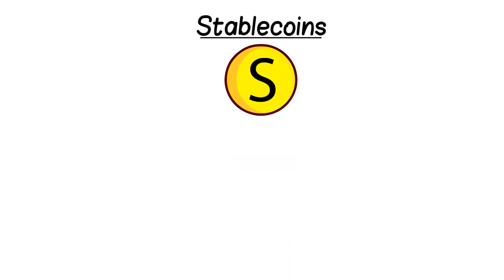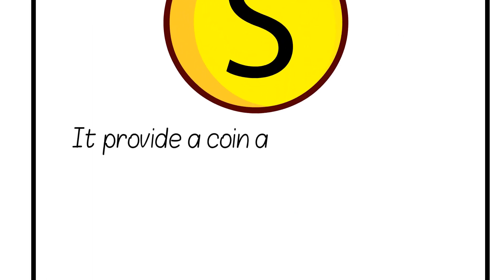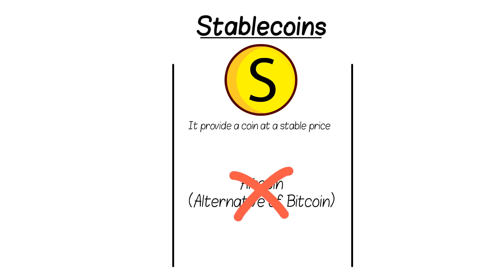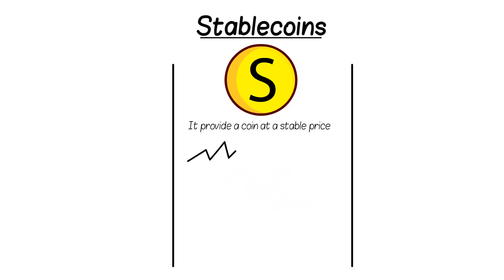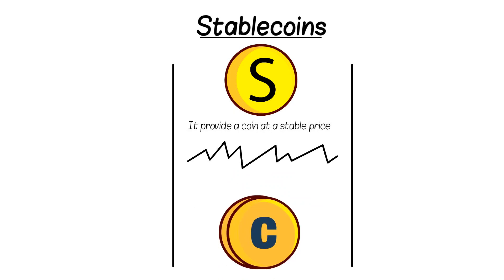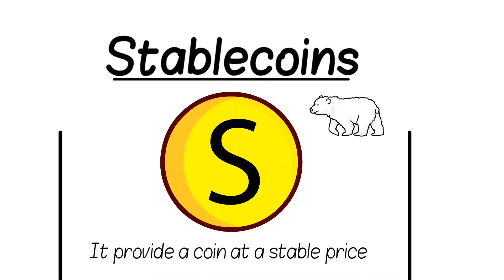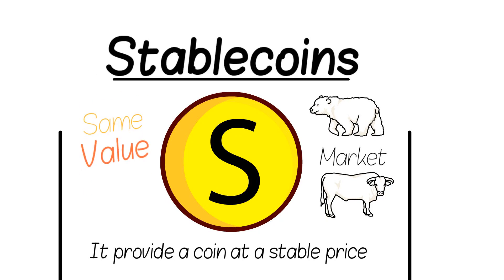The first stop in our journey is the world of stablecoins. At a simple level, stablecoins do exactly what they say in the title — provide a coin at a stable price. Some describe stablecoins as a form of altcoin, but that's not exactly right. Stablecoins were created to provide stability in the incredibly volatile crypto market, keeping a constant value regardless of what happens — whether we're in a bear or bull market.